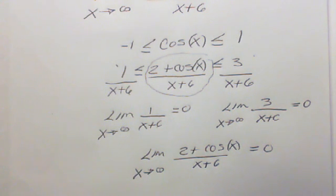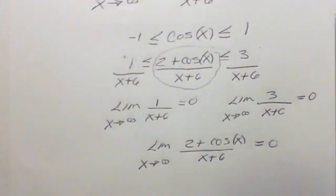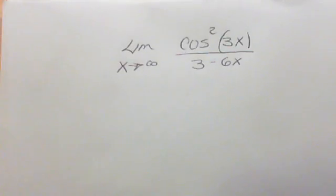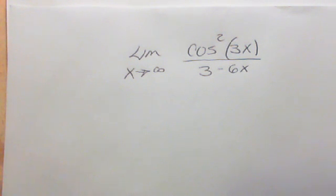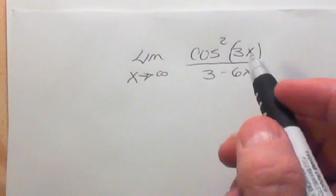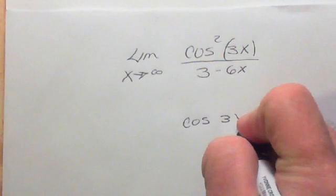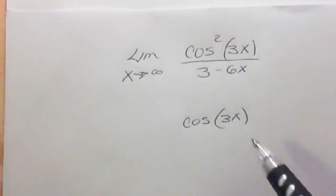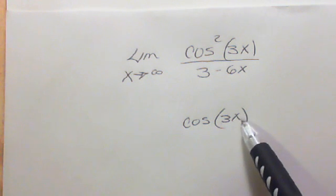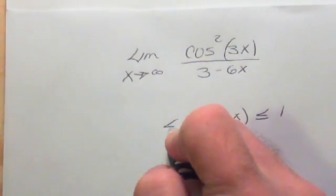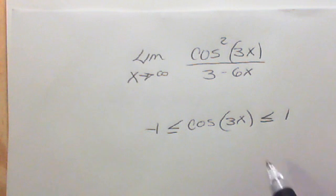Most of these are pretty simple. A lot of them will go to zero, though not in all cases. Let's look at something a little bit more difficult — a function where you're actually squared inside. I have the limit of cosine squared of 3x over (3 minus 6x). Again, start with your basic — start with cosine of 3x. The 3 does not change the range of the function, so it must be less than or equal to 1 and greater than or equal to negative 1.